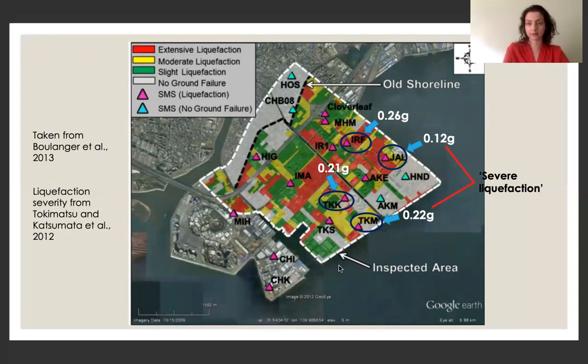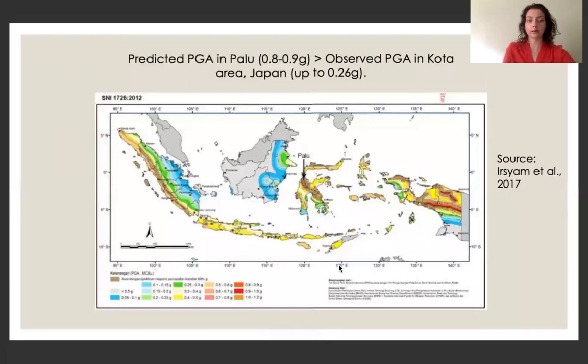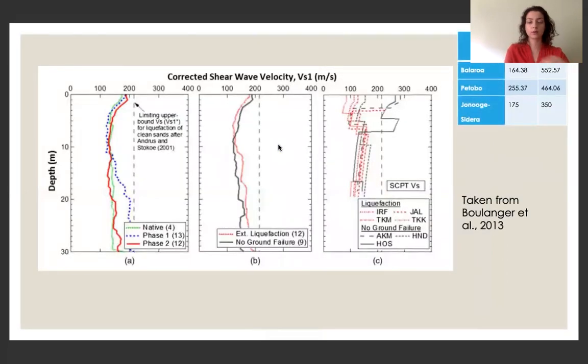So what's interesting is the recorded PGA values at all four sites range from 0.12 to 0.26 G. So why does this matter? What does this mean? Now, not only have similar descriptions been observed, both for the Tohoku event and for the Palu earthquake, but the evidence of liquefaction in Japan occurred at much lower PGA values than what has been mapped for Palu. So 0.12 to 0.26 for Japan and predicted 0.8 to 0.9 for Palu.